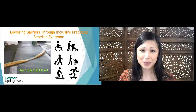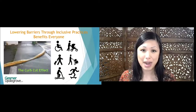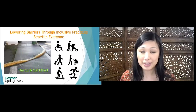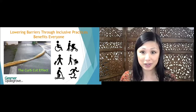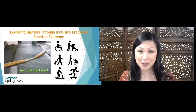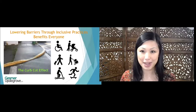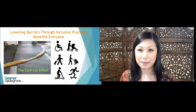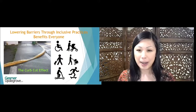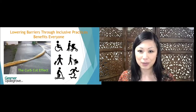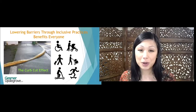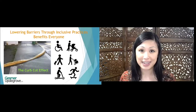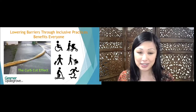Lowering barriers through inclusive practices benefits everybody — this is known as the curb cut effect. In the 1970s, curb cuts were introduced at street corners to make it easier for people who use wheelchairs to get across the street. However, it's not just people using wheelchairs that benefited — it's also people with baby strollers, people with luggage, people using hand trucks, and people on skateboards and scooters and roller skates. Similarly, in open source, when we lower barriers through inclusive practices, it benefits everybody, not just disadvantaged groups.